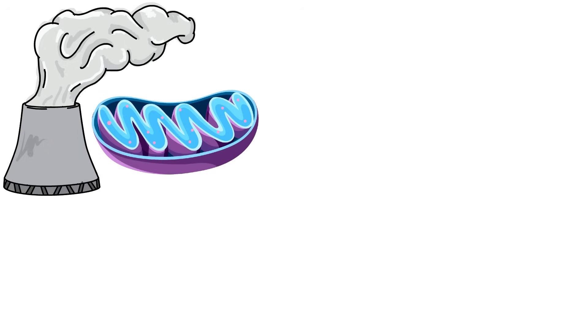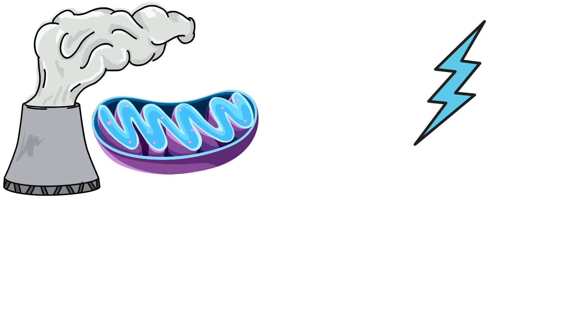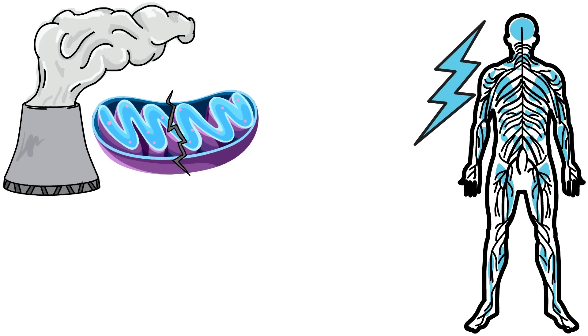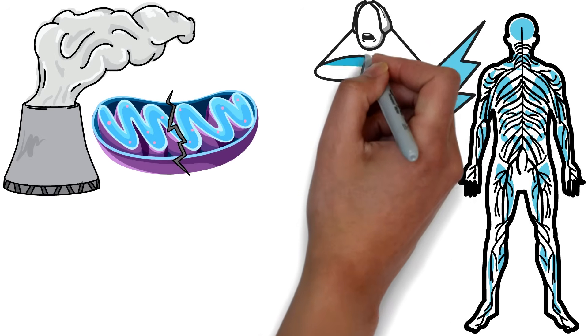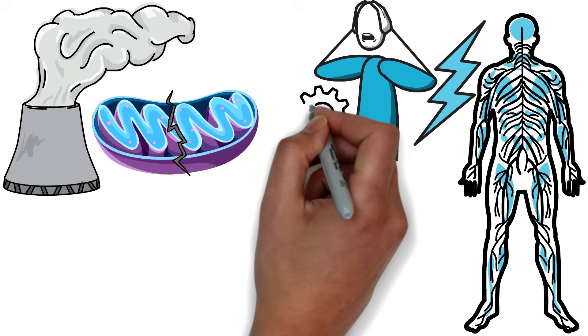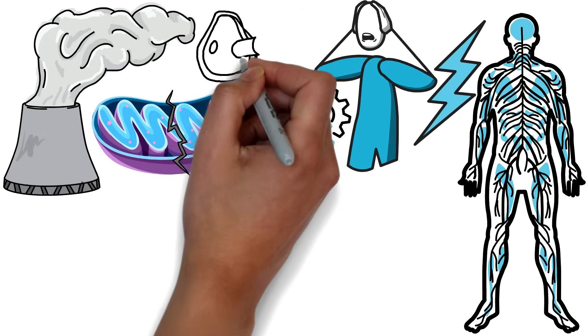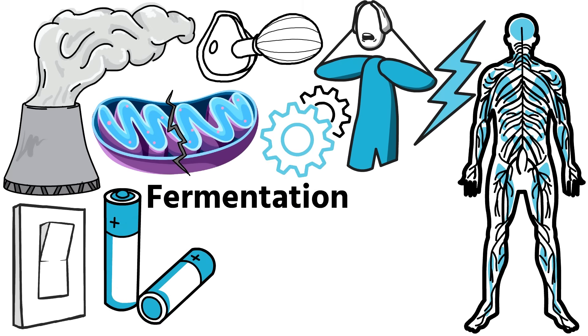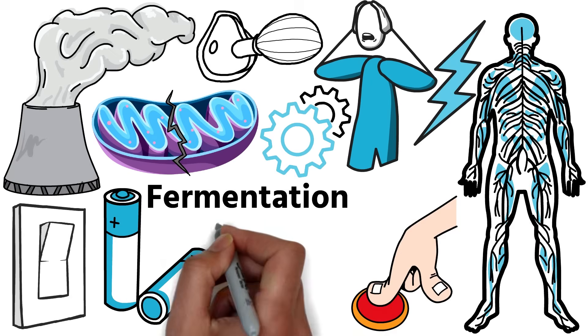Mitochondria are the power plants of our cells, producing the energy needed to keep the body running. When these mitochondria become damaged by toxins, stress, or poor lifestyle habits, cells lose their ability to use oxygen efficiently. They then switch to an ancient backup system for energy known as fermentation. This is the point where cancer begins to take hold.